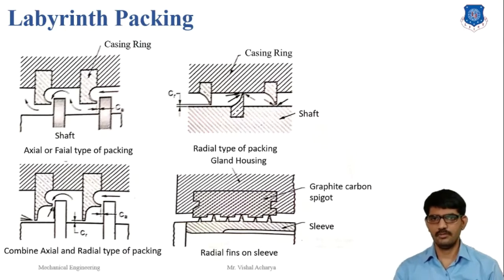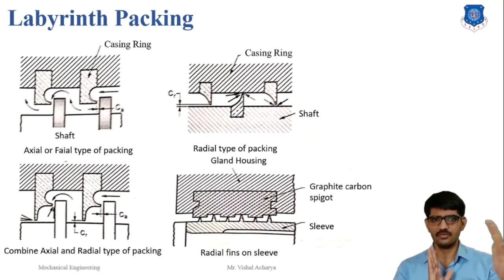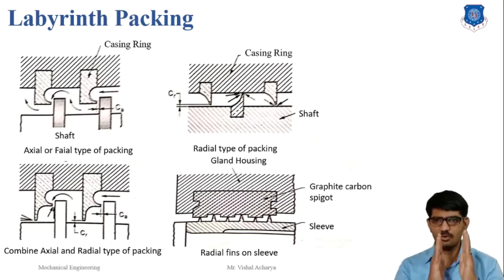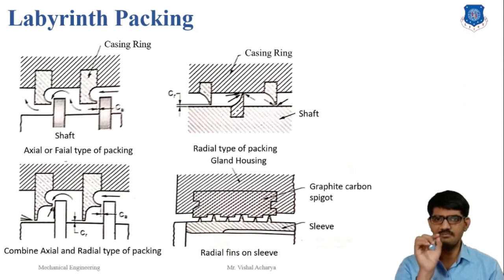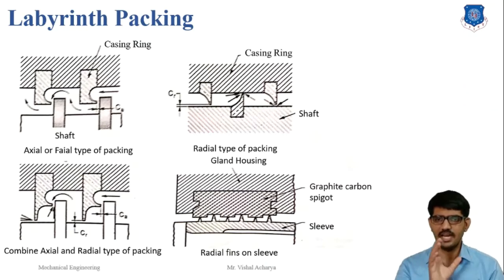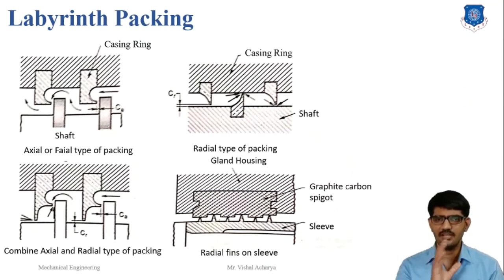The function of labyrinth packing in a steam turbine: the turbine rotor rotates inside the casing and extends outside the casing at both the front and rear. The portion from where the rotor exits the turbine casing is called the gland. There is a chance of steam leakage and atmospheric air ingress at the front and rear gland respectively, so it is required to seal these portions.